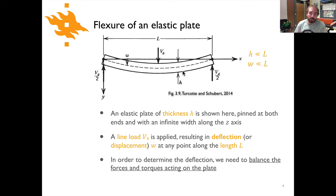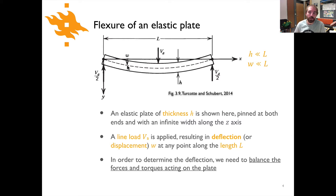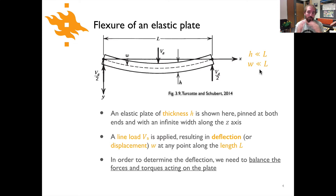The plate has a thickness H indicated here, and as noted H is much much smaller than L. The deflection W shows the displacement of the elastic plate from the y = 0 position to the middle of the plate, and the amount of deflection is much much smaller than the length of the plate. In other words, the plate is much longer than it is thick and its deflection is relatively small compared to its length.